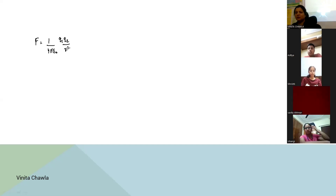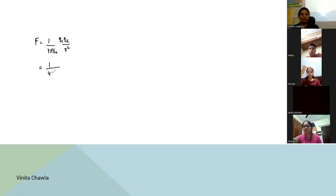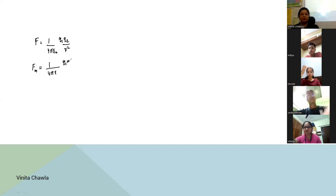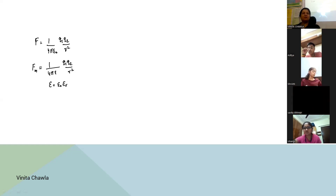Epsilon naught is the electrical permittivity of free space. If we have a medium other than air or vacuum, then epsilon naught is replaced by epsilon for a medium. This force becomes Fm — F for medium — and it equals Q1 Q2 by R square, where epsilon equals epsilon naught times epsilon R. Epsilon R is the relative electrical permittivity.